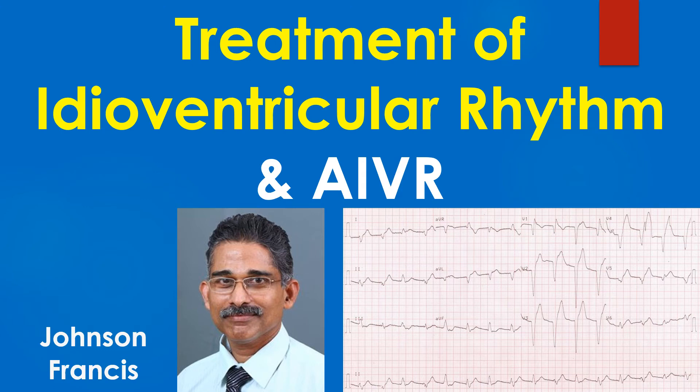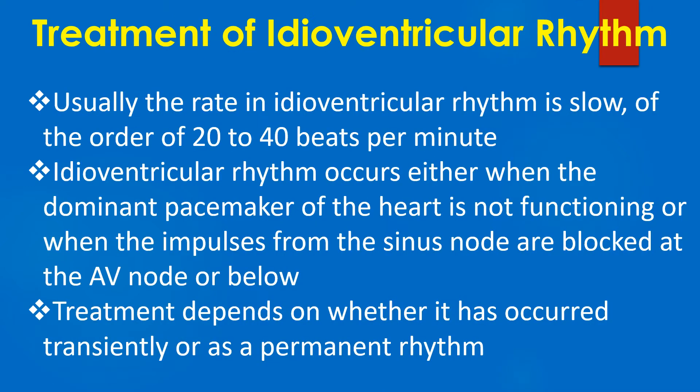Idioventricular rhythm is a form of heart rhythm originating from the ventricles. It is recognised on the ECG by a wide QRS complex and absence of preceding P waves. Dissociated P waves may be seen sometimes. Usually the rate in idioventricular rhythm is low, of the order of 20–40 beats per minute.